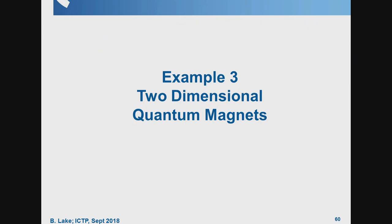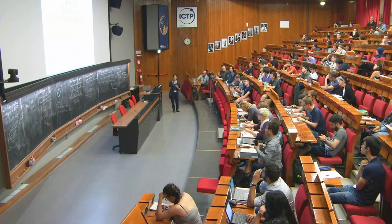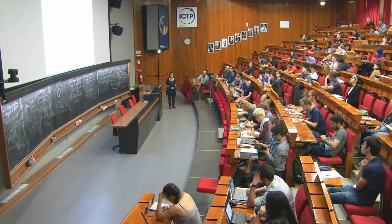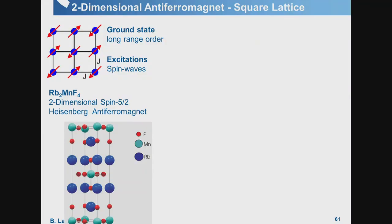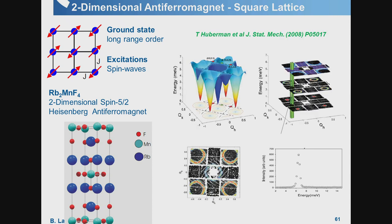With five minutes left, I'll talk about two-dimensional magnets — first unfrustrated, then frustrated. The spin-5/2 square lattice, realized in rubidium manganese fluoride, is unfrustrated. Spin wave theory predicts dispersion cones coming out of Bragg peaks. A constant-energy cut shows rings of dispersion, and indeed the data at low energy shows dots becoming rings as energy increases, with rings merging at the top. These are sharp rings, resolution-limited, as expected.